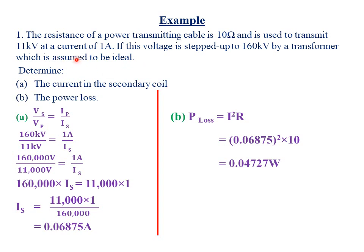Since we are told to assume that the transformer is ideal, we are going to use the equation for ideal transformers. We looked at ideal transformers in our previous topic, which was electromagnetic induction — you can review that topic on this channel. From that topic, we established the relationship: voltage in the secondary coil divided by the voltage in the primary coil equals the current in the primary coil divided by the current in the secondary coil. This is only possible for an ideal transformer.